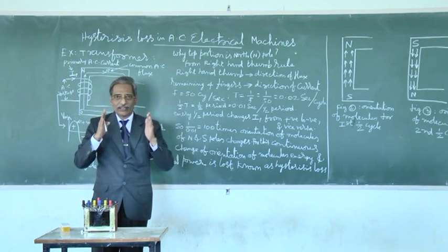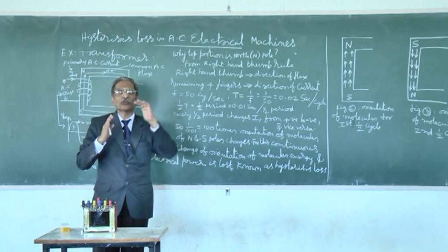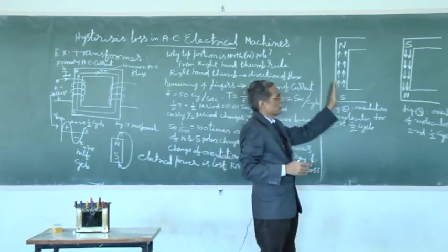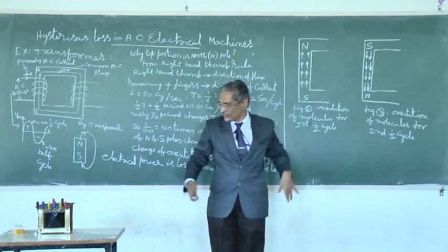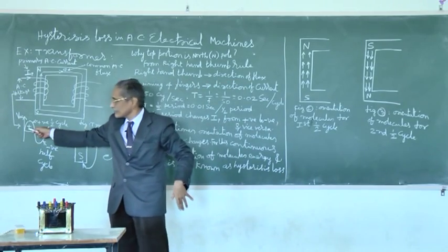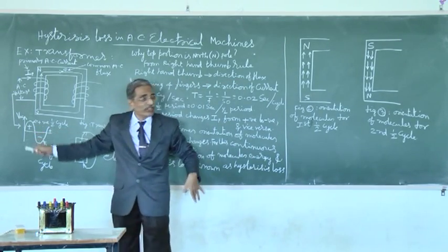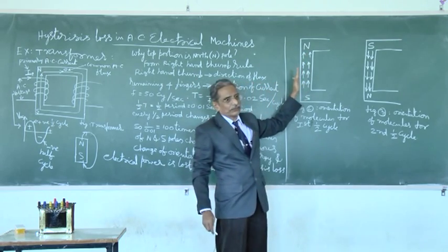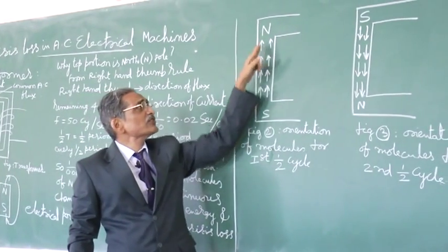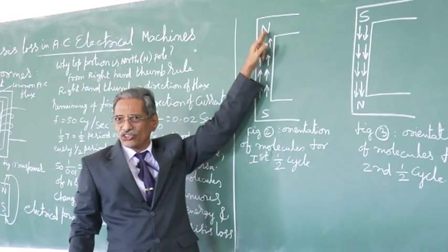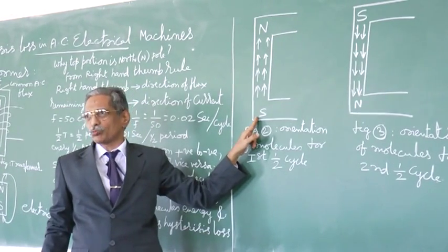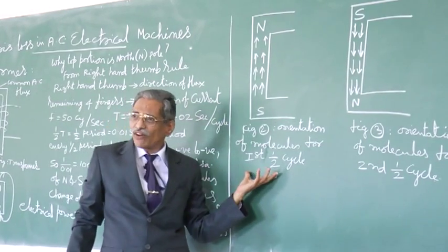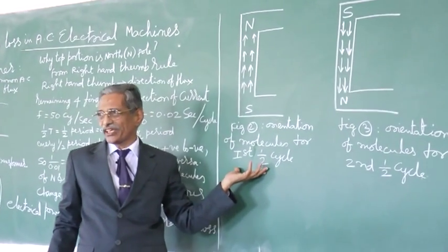Orientation means direction. Direction of north and south poles will reverse. First, let us say this case. Positive half cycle means this. Positive half cycle. Orientation means direction. Direction of molecules is upwards. So, this is north pole and this is south pole. Of course, we call it as figure 2. This is only for first half cycle.